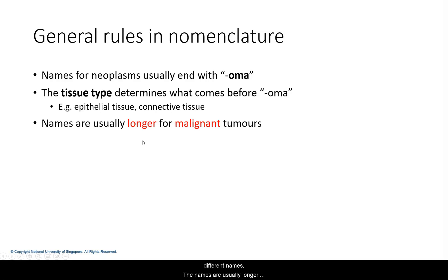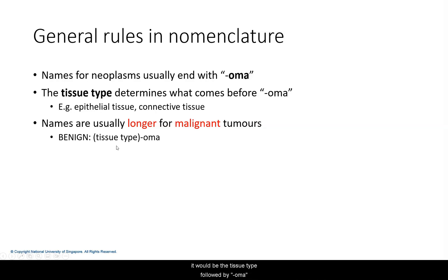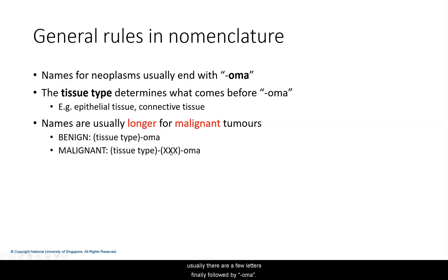The names are usually longer for malignant tumours. For example, for a benign tumour, it would be the tissue type followed by -oma, and for a malignant tumour, it's the tissue type and then usually a few additional letters finally followed by -oma.